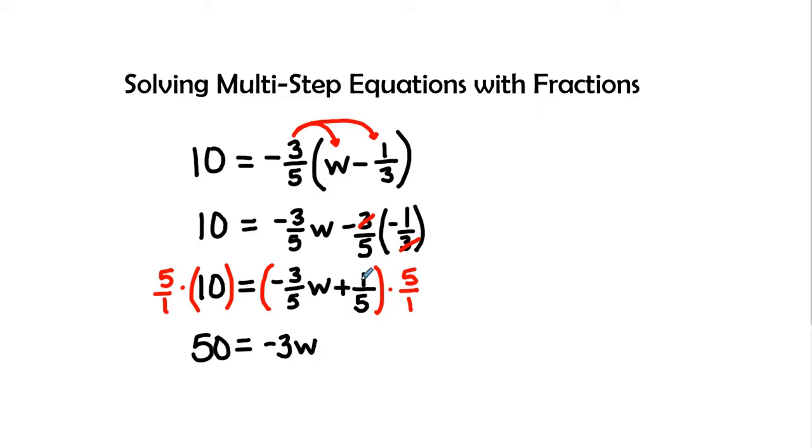Five times one is five, divided by five is plus one. Now we have fifty equals negative three w plus one.